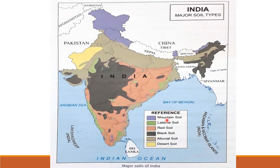Laterite soil is shown using green color. Laterite soil is found in Karnataka, Kerala, Tamil Nadu, Odisha, West Bengal, and some parts of Rajasthan.